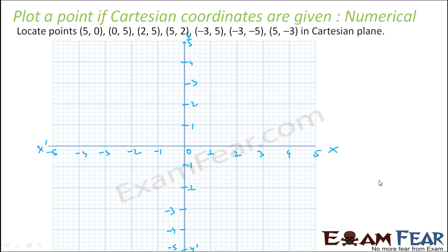Let's plot the first point: 5 comma 0. Which point is 5 on the x-axis? The only point at x equals 5. And 0 on the y-axis is the origin. If we draw a perpendicular line from x equals 5 and from y equals 0, they will meet right here on the x-axis. This is the point 5 comma 0.